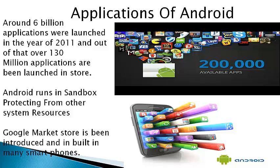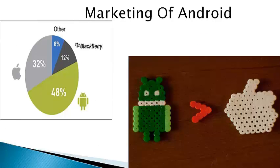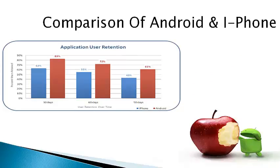Google also markets the Play Store and it has been introduced in many inbuilt smartphones. Looking at the graph, we can see that Android phones are used vastly when compared to other phones. Android is at 48%, Apple is at 32%, Blackberry is used by only 12% of people, and other phones account for only 8%. This graph shows a typical comparison of Android phones and iPhones according to user percentage.